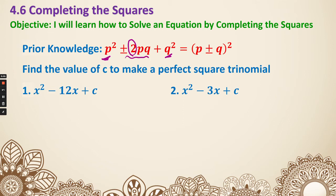That's the requirement. So if we think another way, if you're trying to figure out what the last number is, you need to use the middle term, get rid of the 2, and also get rid of the p, to get what q squared is.